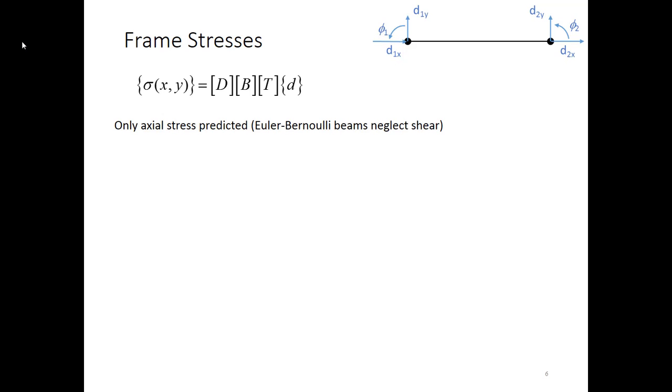The last quick thing that I want to talk about in this video are how we calculate stresses in a frame. We have our general expression for stress. The stress vector is equal to the D matrix, the B matrix and the T matrix multiplied by the degree of freedom vector for this element.